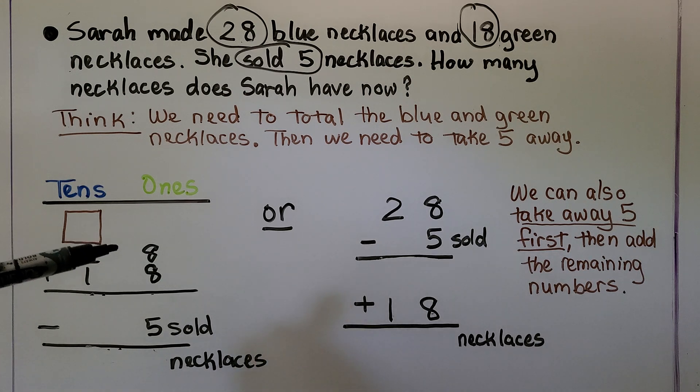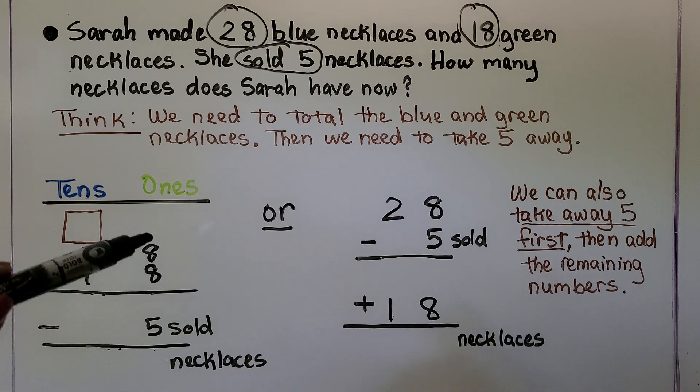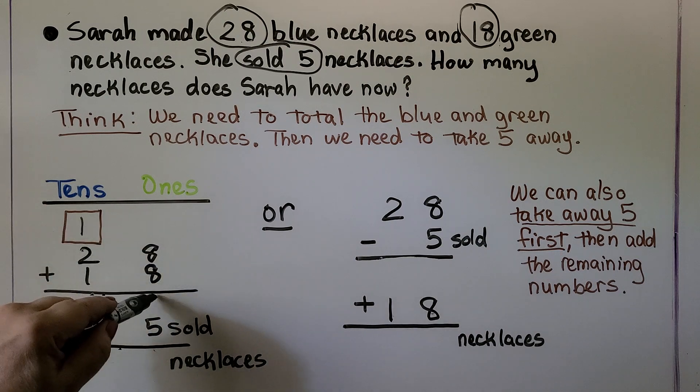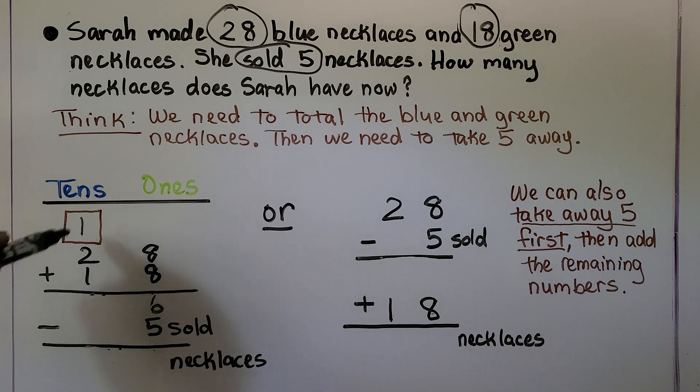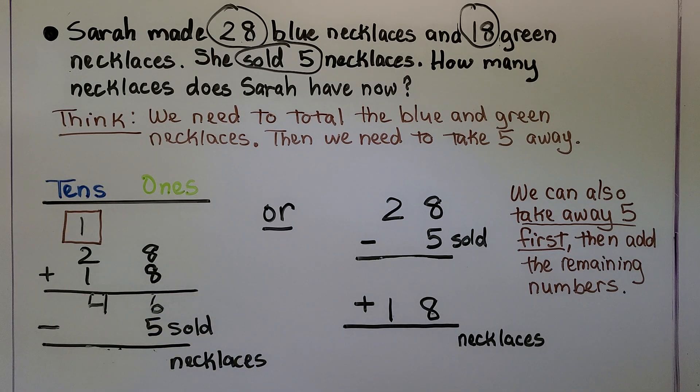We can add 28 plus 18. The blue plus the green. 8 plus 8. That's a doubles fact. That's 16. That's 1 10 6 1s. Then we add the tens column. We have 2, 3, 4. That means she made 46 blue and green necklaces. And she sold 5. So we're going to subtract 5 from the 46 she made. 6 minus 5 is 1. That means she has 41 necklaces.